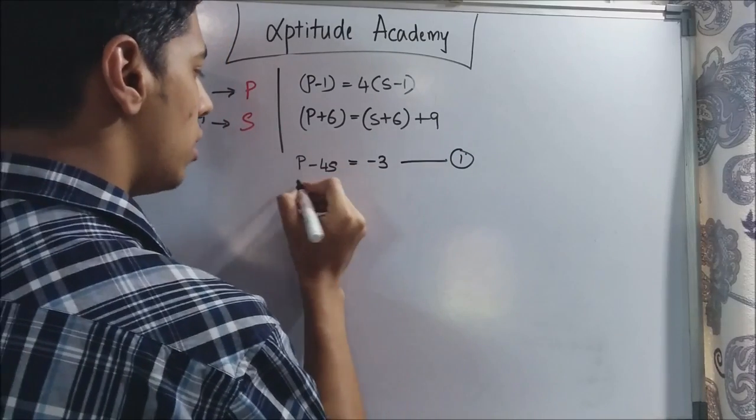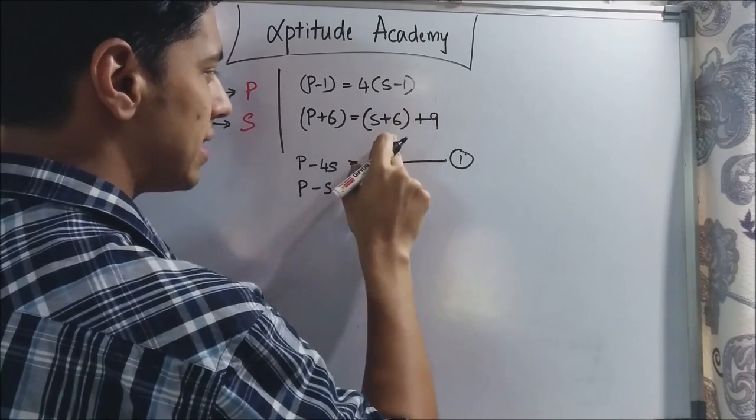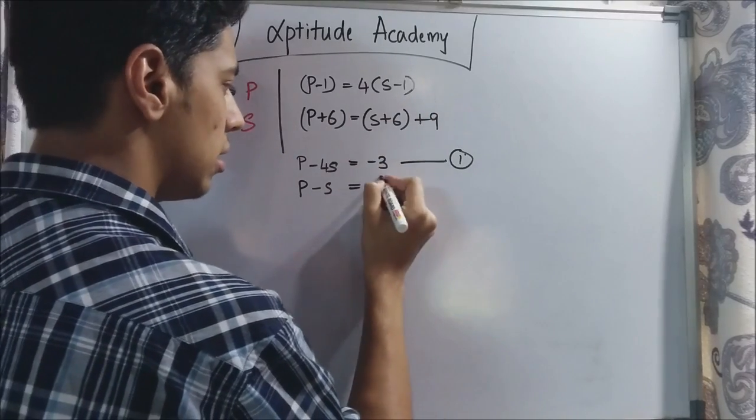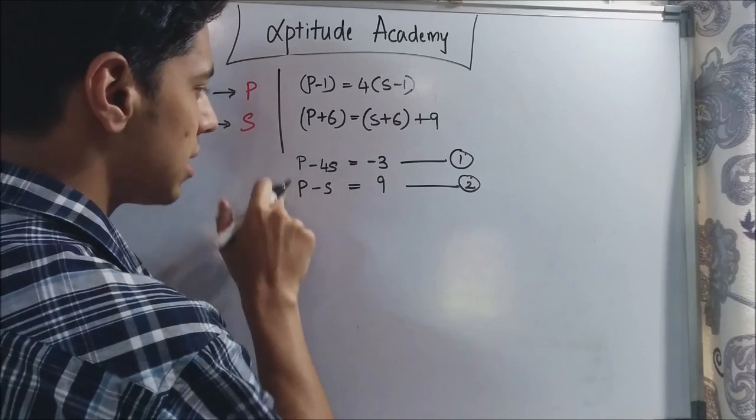And this one will be P. You take S here so it will be minus S. Then you take minus 6 here and you got plus 6 here so they cancel out. It will be 9. Now just subtract both these equations.